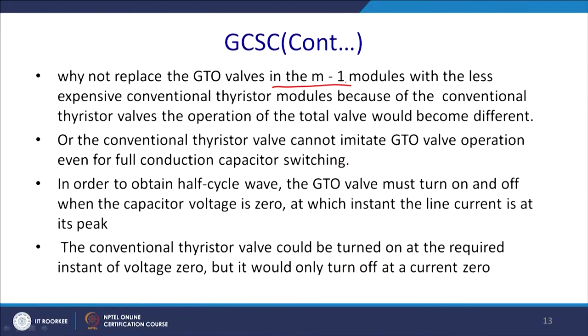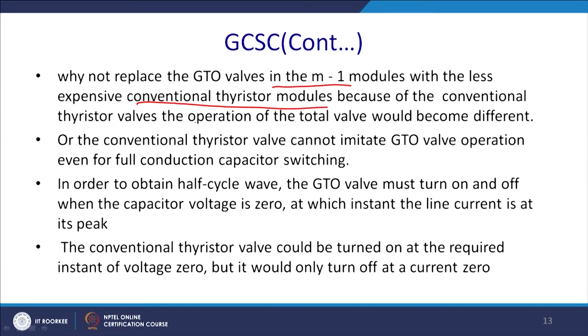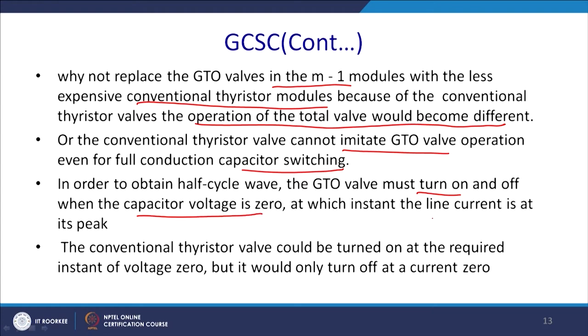Why not replace the GTO valve in M minus 1 modules with a less expensive thyristor module? Since it is a current control device and you are turning off the GTO in series, no current will flow through the thyristor and it will automatically turn off. However, conventional thyristor valves operate differently — a conventional thyristor valve cannot emulate the GTO valve operation even under full conditions of capacitor switching. In order to obtain the half-cycle wave, the GTO valve must turn on and turn off when the capacitor voltage is zero, at which instant the line current is at its peak.